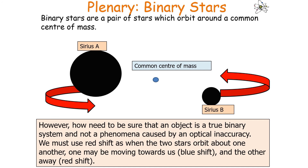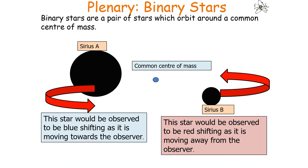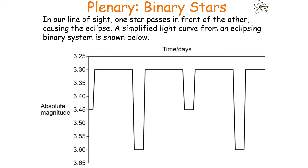To confirm it's a true binary system and not an optical phenomenon, we use redshift. As the two stars orbit one another, one will be moving towards us and the other moving away. The star moving towards us will be blueshifting, whilst the star moving away will be redshifting. In our line of sight, one star will periodically pass in front of the other, causing an eclipse.